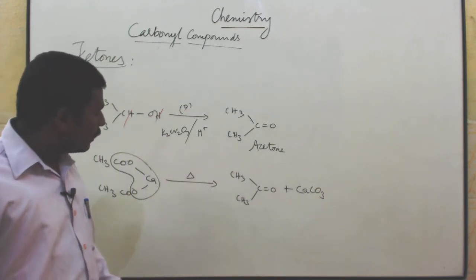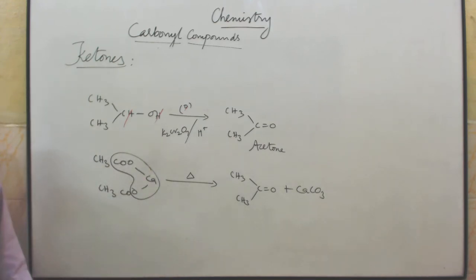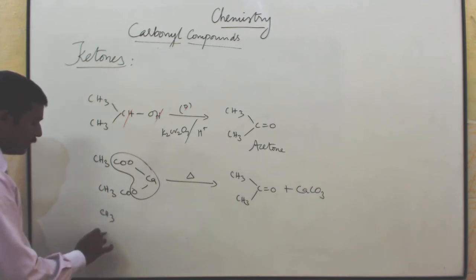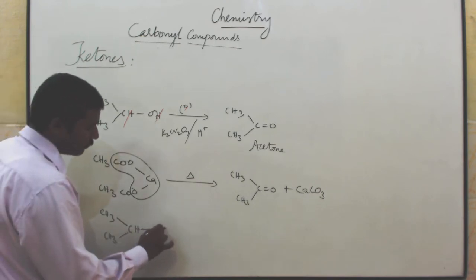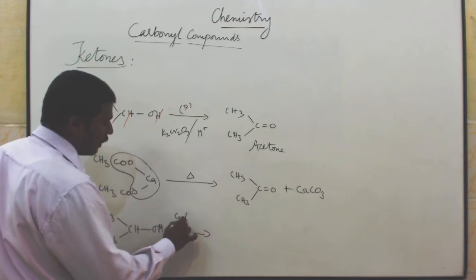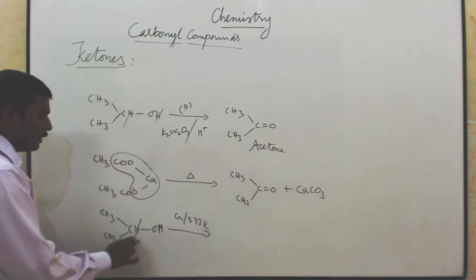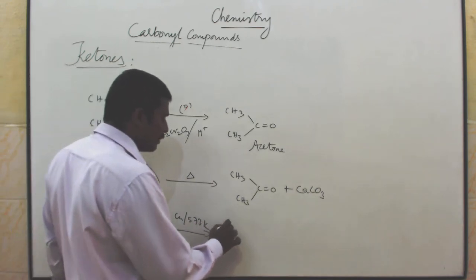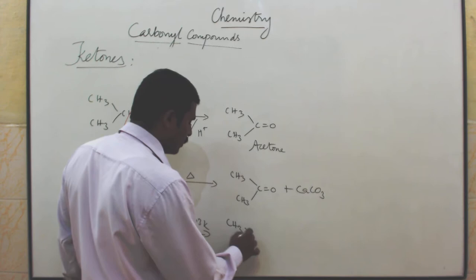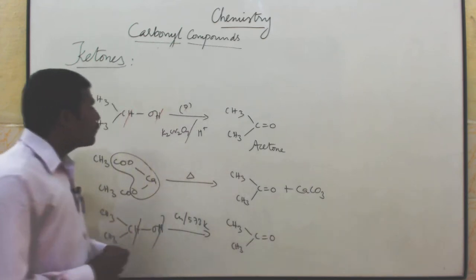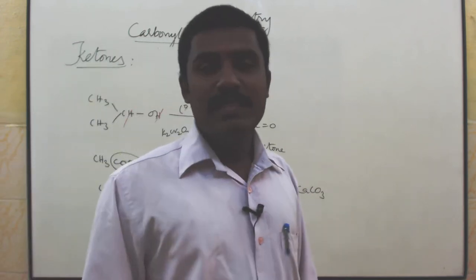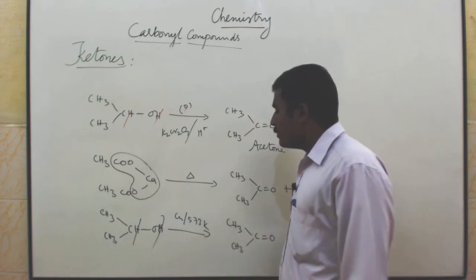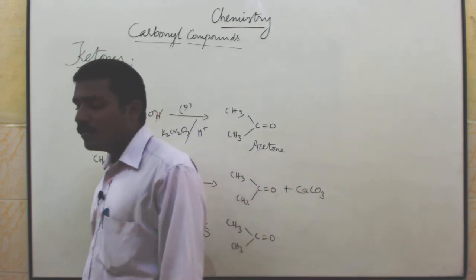Then, isopropyl alcohol reacts with copper at 573 Kelvin. Isopropyl alcohol, (CH3)2CHOH, reacts with copper at 573 Kelvin. There is removal of two hydrogen atoms, and remaining is acetone, CH3COCH3. So: first method is oxidation in acidified potassium dichromate; second is dry distillation; third is oxidation in presence of copper at 573 Kelvin.